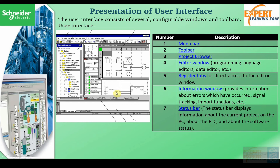Then there is the register tab, which is for direct access to different windows that we have already opened — it opens like an Excel workbook. Then there is the information window, where we can see different information about errors that have occurred, signal tracking, imported functions, and warning signals that can guide us when building our application. Then there is the status bar, which displays information about the current project on the PC, about the PLC, and about the software status — including build options, whether the project is running, or in stop mode.